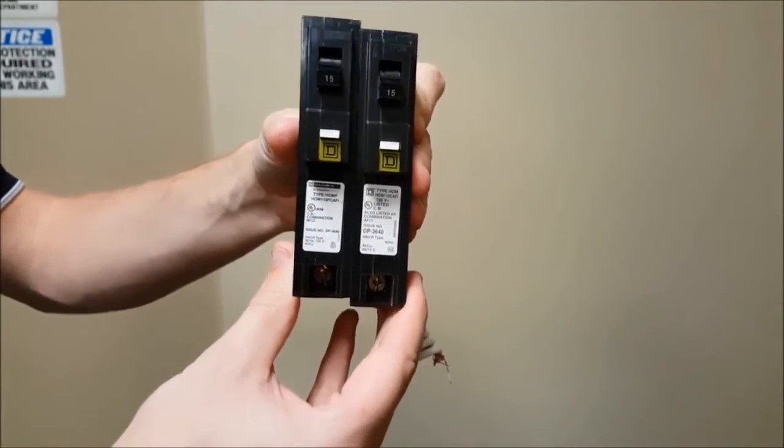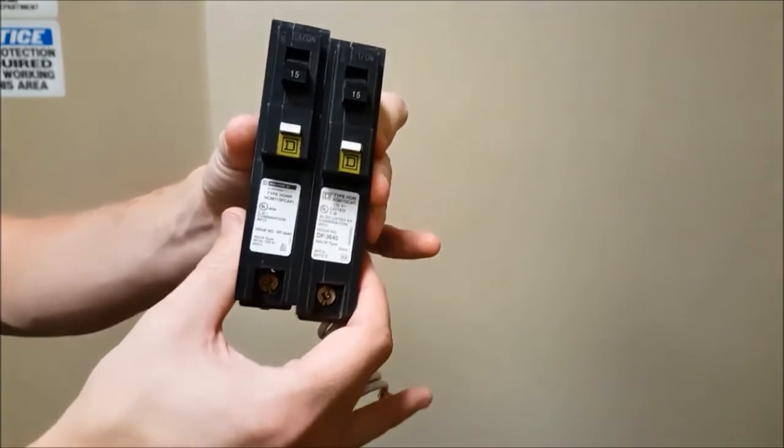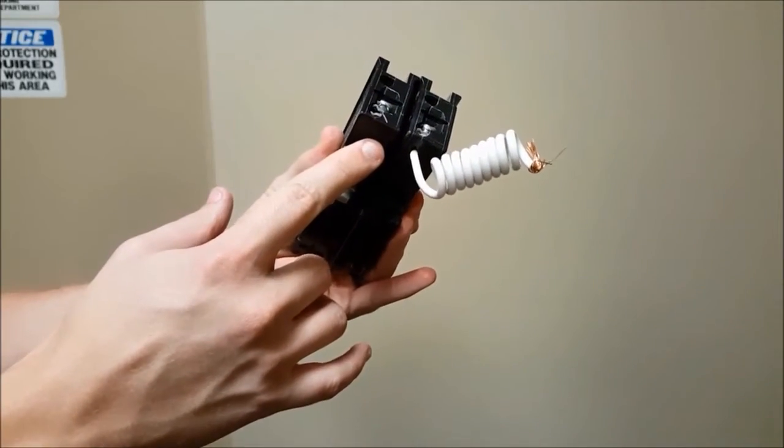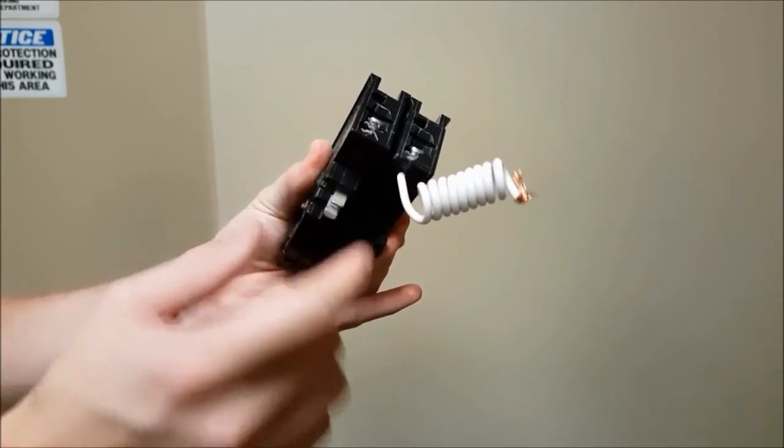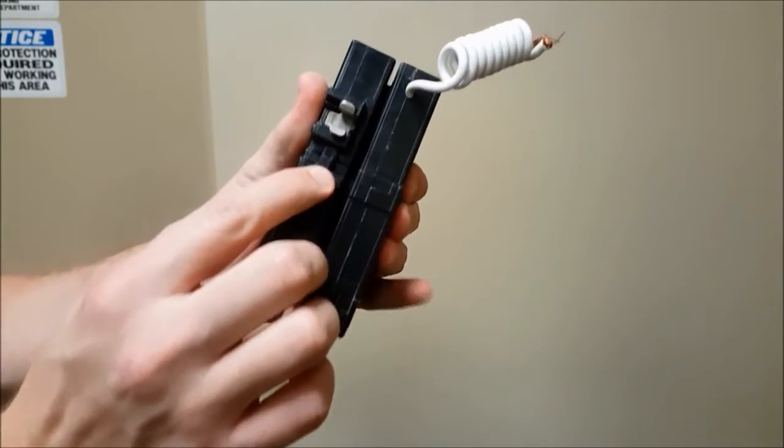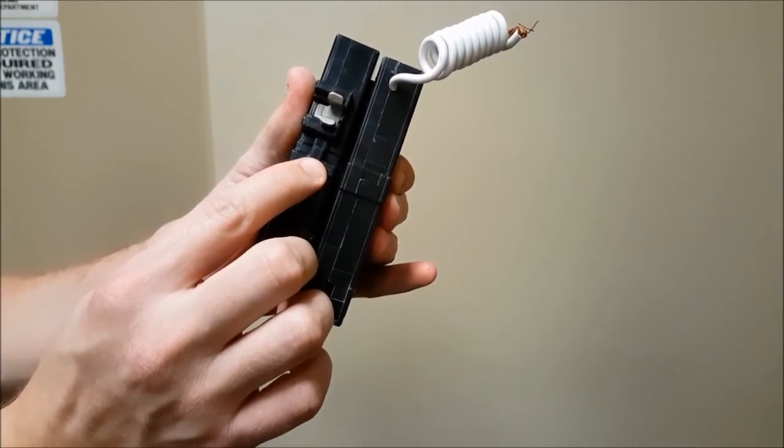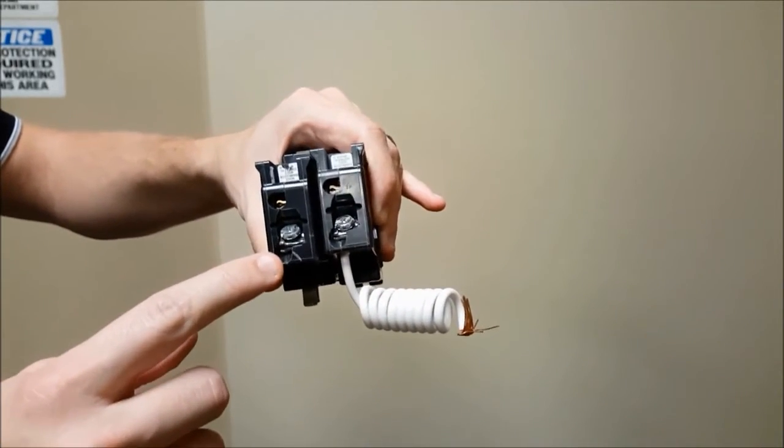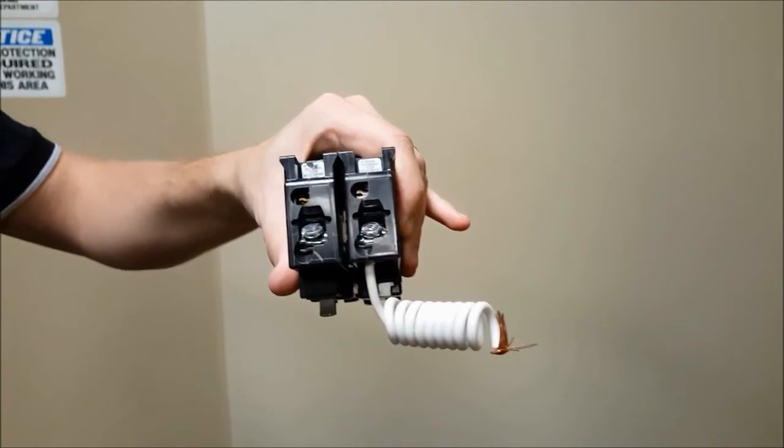You'll see that from the front the two breakers are about the same. The main differences will be the lack of the neutral pigtail on the plug-on neutral version as well as the rejection feature on the plug-on neutral version. Note that both breakers still have the load neutral connection for the load neutral from the circuit.